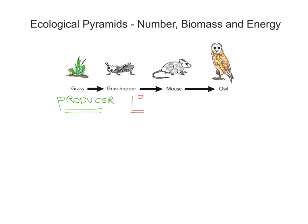You can see the mouse eats the grasshopper, making it the secondary consumer. And then at the top you can see we've got the owl eating the mice, which makes that the top predator — though it's a bit of a short food chain in this instance. So you've got the producer, primary consumer, secondary consumer, and the owl as the predator.